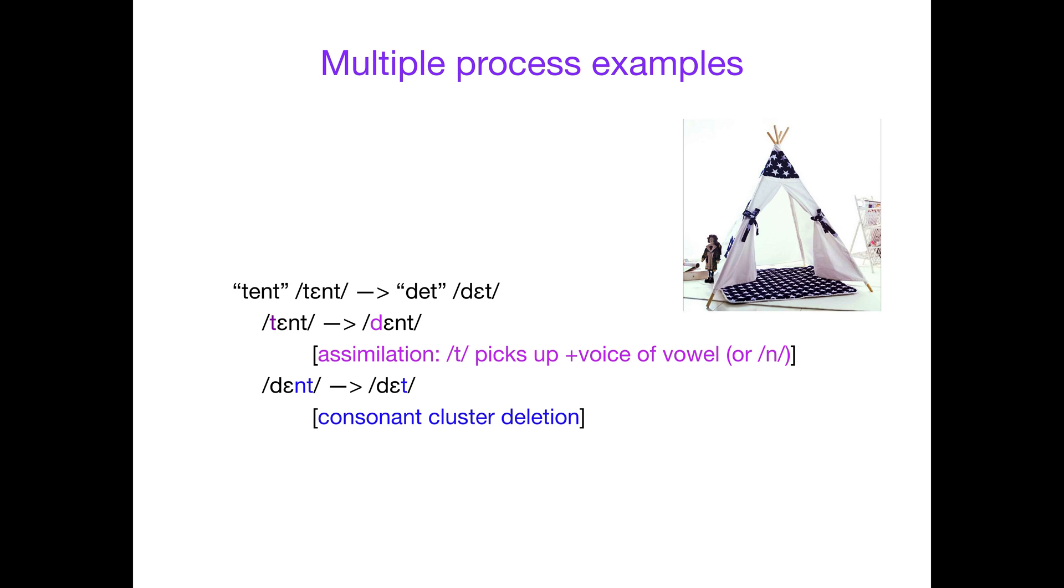Let's do one more. We have tent becoming debt. What happened here? First of all, one thing you can notice is that we've changed the ta to a da sound at the beginning. Ta is a voiceless alveolar stop. Da is a voiced alveolar stop. The only thing that's changing is voicing. Where are you going to get voicing from? Pretty much the vowel sound eh or the nasal na, both of which are voiced. You can do assimilation where ta is picking up the plus voice of the vowel or the n. So now we have dent, and we want to get to debt. How do we get from nt to ta? The only way that we've talked about is consonant cluster deletion, because you're deleting that n from in between, but it is in a cluster of consonants.